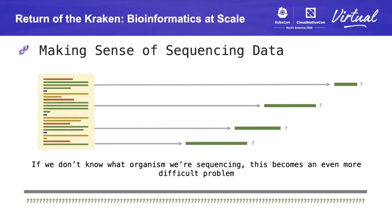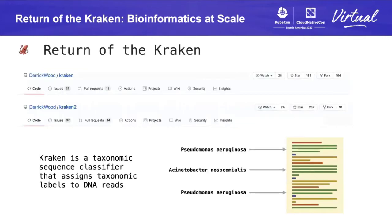There are dedicated specialists thinking about how to effectively and correctly put this massive puzzle together — the computational biologists and the bioinformaticians. They've produced an entire ecosystem of tooling to try to take these reads with very little information and turn them into something meaningful. One of the tools that's part of that ecosystem is called Kraken, which is a taxonomic sequence classifier. Kraken takes reads and tries to determine what species genome a given read sequence belongs to.